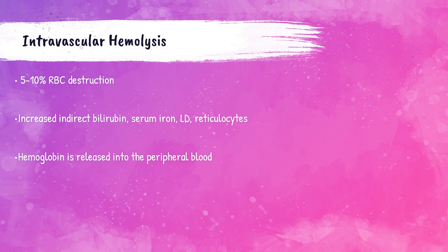Intravascular hemolysis — the lysis of red blood cells within the circulation, releasing hemoglobin into the peripheral blood — accounts for 5 to 10% of red blood cell destruction. Increased intravascular hemolysis results in increased indirect or unconjugated bilirubin in the blood, and also an increase of iron, reticulocytes, and lactate dehydrogenase (LD). LD is present within blood cells, so when they lyse, LD spills into the bloodstream. When premature intravascular hemolysis is occurring, the body works in overdrive to produce more red blood cells and releases many retics into the bloodstream to eventually become mature red blood cells.